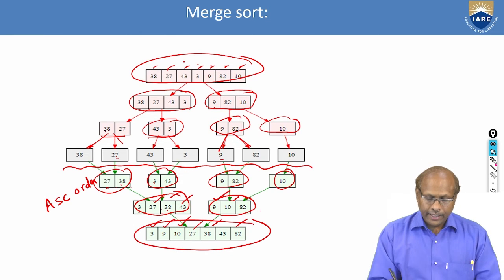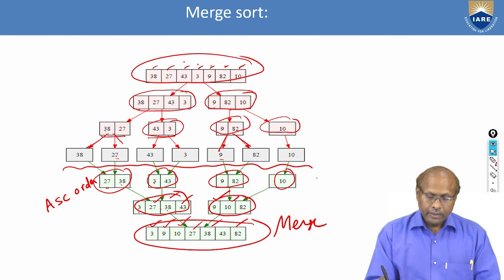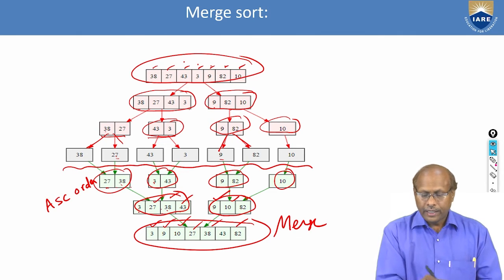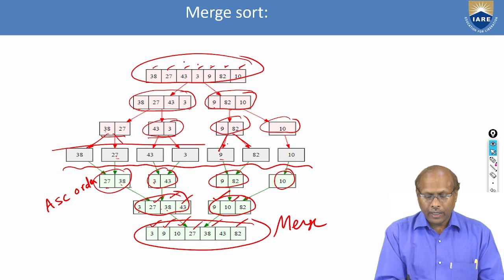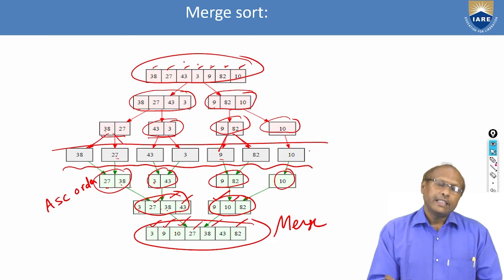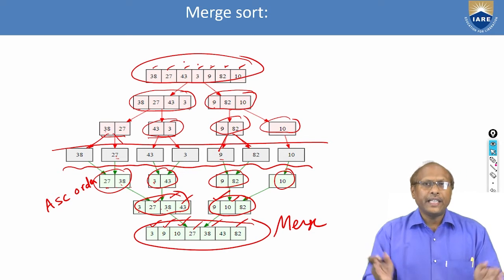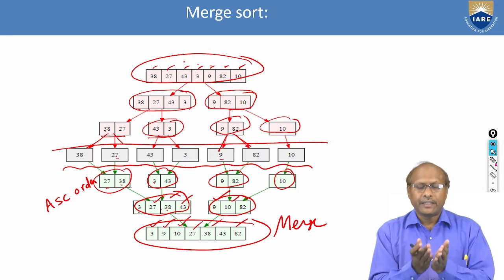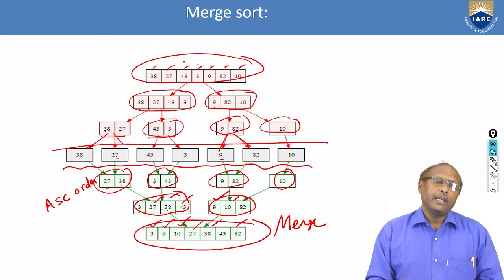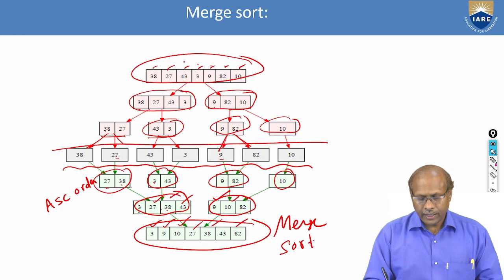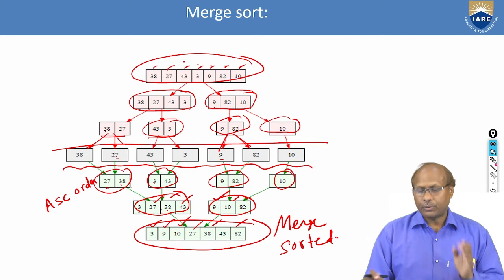So when you reach the bottom, merging will be done. Up to the middle, it is divided into two equal halves. Once it has reached individual elements in the group, then it will start merging. At the final level, you will be getting data in sorted order. This is how the process works.